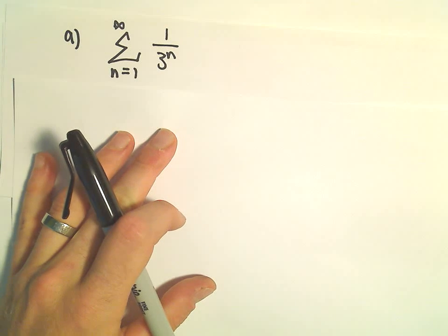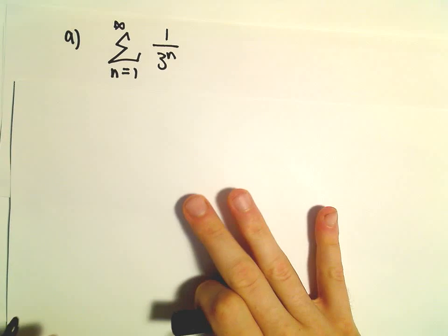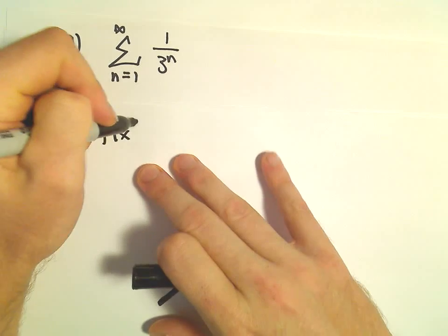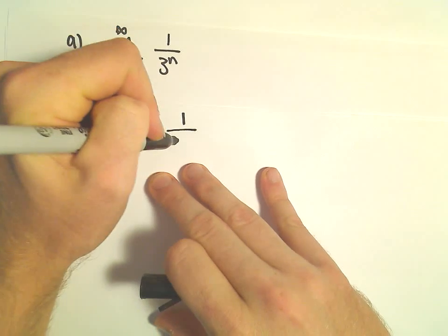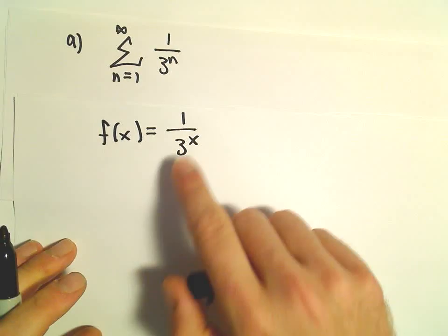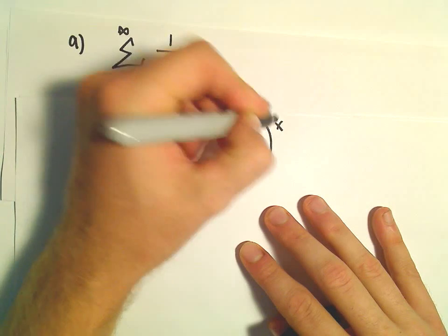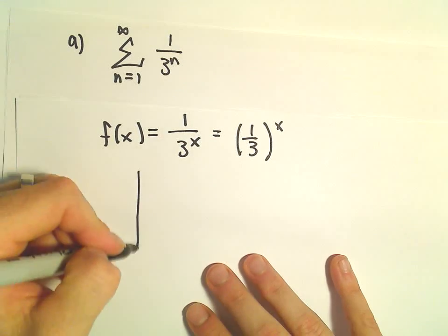There are certainly different ways to do this one other than the integral test, but we can talk about it using the integral test. If you think about the function 1 over 3 to the x, that's the same thing as 1 over 3 all raised to the x. Recall this is an exponential function.